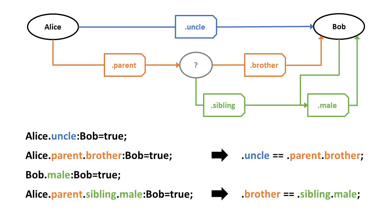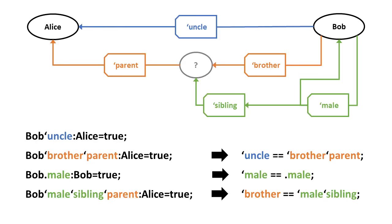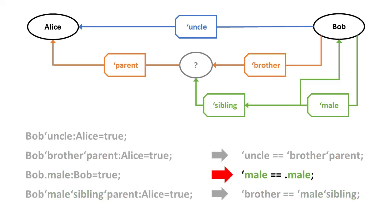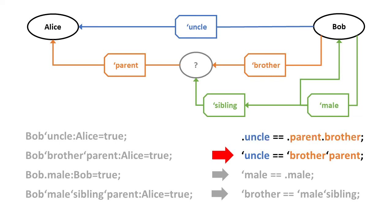Back to the Alice-Uncle-Bob chart, we can take every relation here and invert them. Take a look at the inverted relation definitions. Male is reflexive, meaning its A and B are the same, therefore it is its own inverse. Inverse uncle is defined by a chain that has been inversed and reversed.